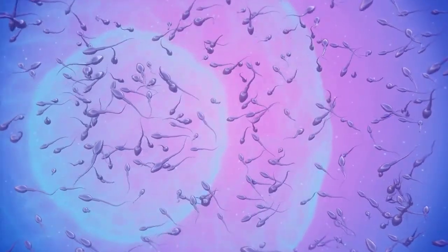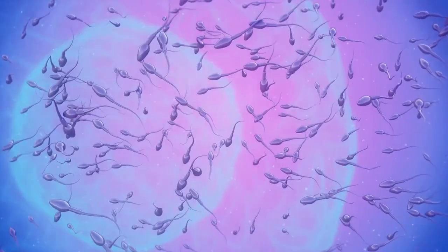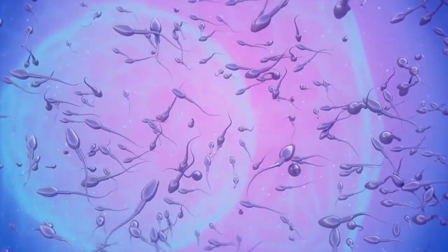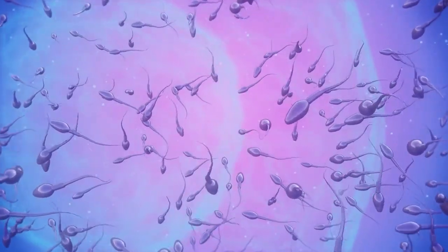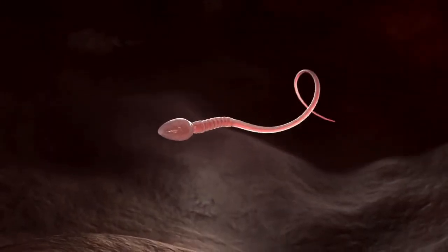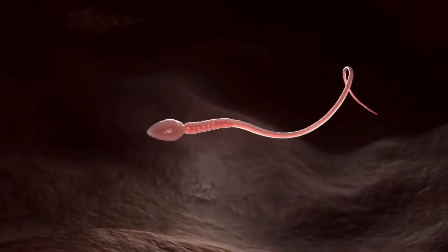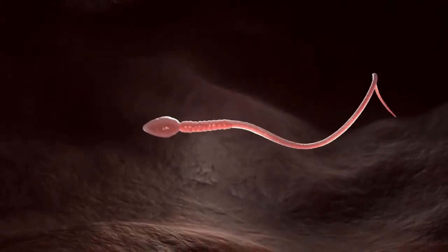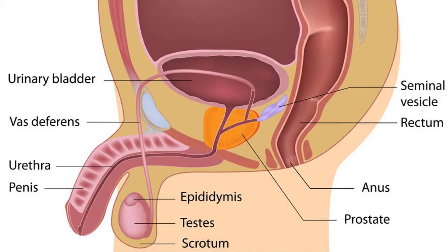A male can produce numerous sperm cells. An average man can have approximately 5 million in a single drop of his semen. Out of these millions of sperm cells, only one is needed to fertilize an egg cell. The illustration shows the parts of the male reproductive system. These parts have specific functions and they work together so that the male reproductive system can work.